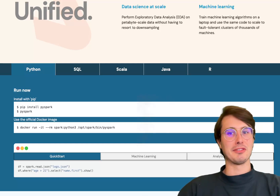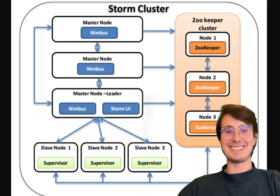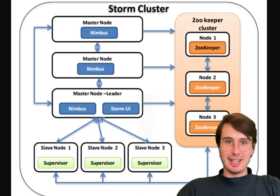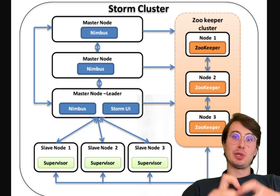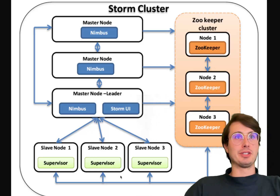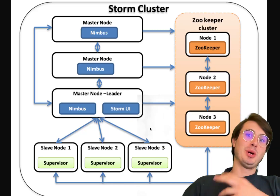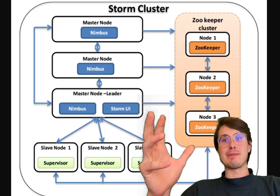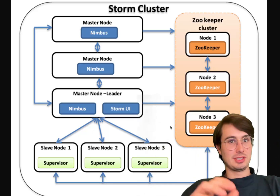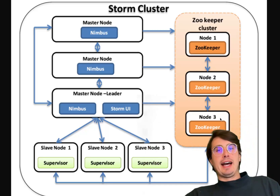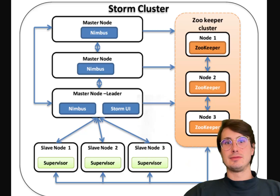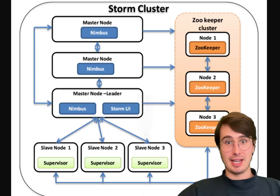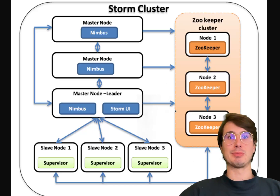Now finally, the least documented option of the three: Apache Storm. Apache Storm is a real-time distributed stream processing engine designed — unlike Spark — for ultra-low-latency processing. It processes data through a topology of spouts, which are data sources, and bolts, which are processing units, linked together on a many-to-many basis. Storm's architecture is geared towards simple, low-latency, high-throughput workloads and is really ideal for applications requiring sub-second processing.